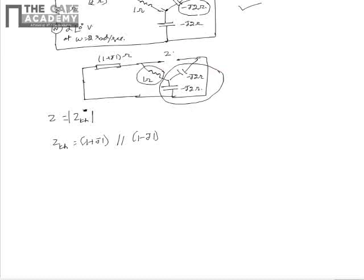So we can see that Zth can be written as 1 plus j1 in parallel with 1 minus j1 as shown. So this upon simplification becomes 1 plus j1 multiplied by 1 minus j1 divided by 1 plus j1 plus 1 minus j1.